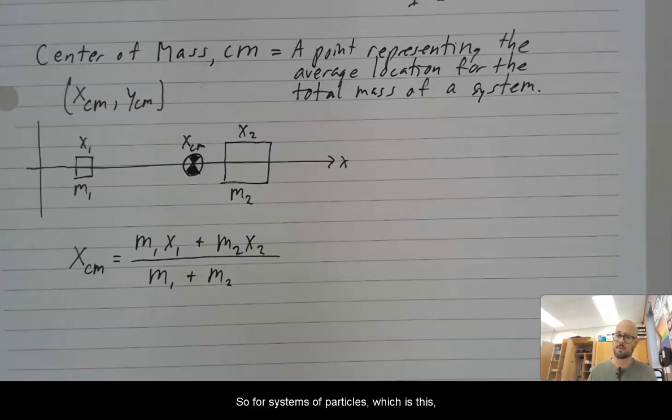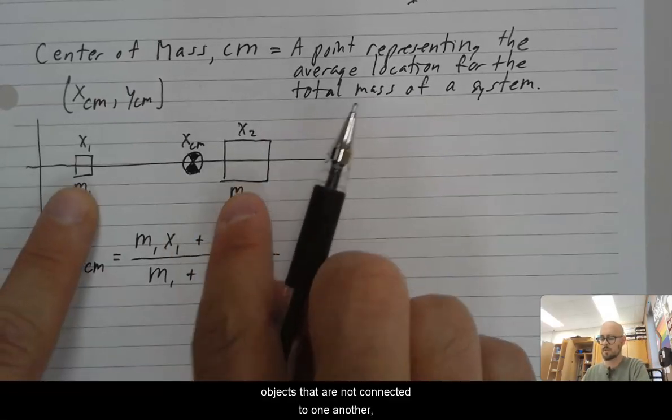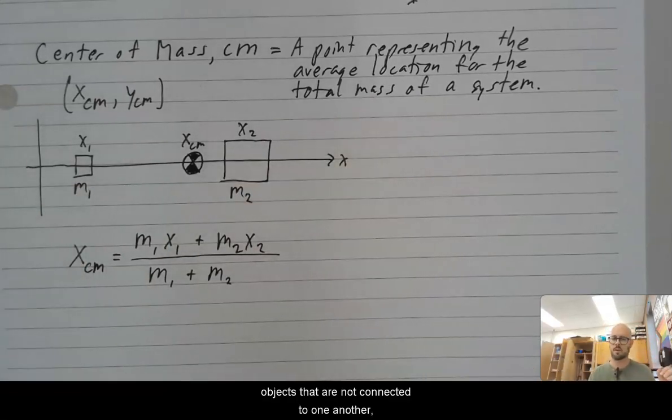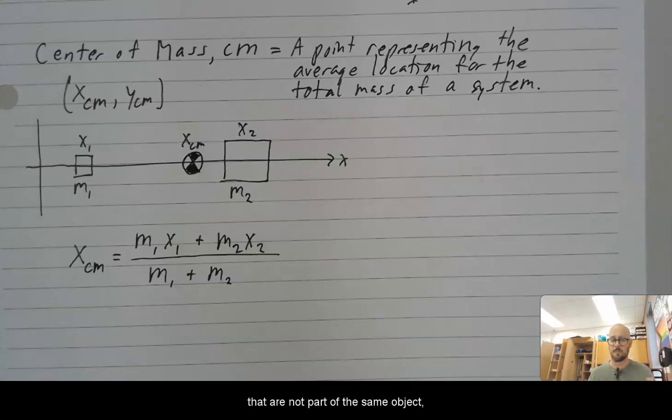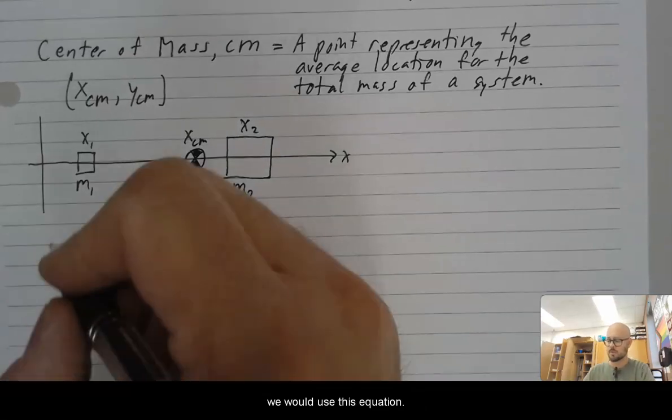And so it essentially pulls the mass closer to that one. So for systems of particles, which is this, objects that are not connected to one another, that are not part of the same object, we would use this equation.